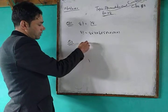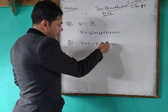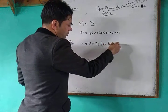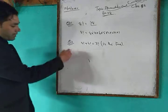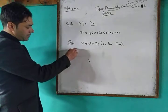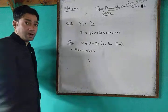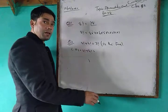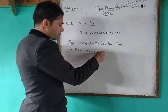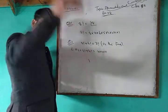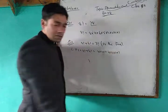Question number 2: Is 3 factorial plus 4 factorial equal to 7 factorial? Let us check. Taking the LHS, that is 3! + 4!. By the factorial formula, 3! = 3 × 2 × 1 and 4! = 4 × 3 × 2 × 1.